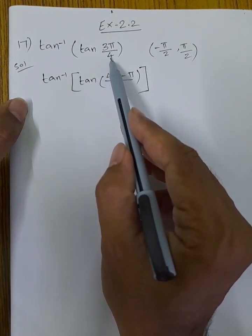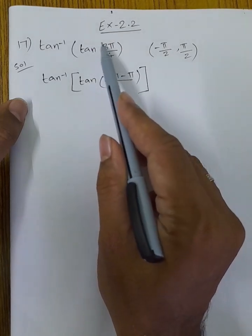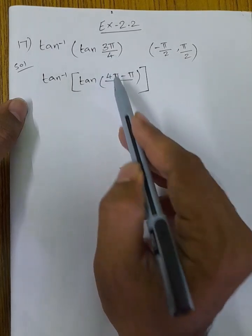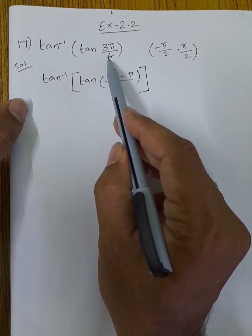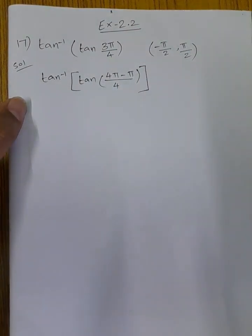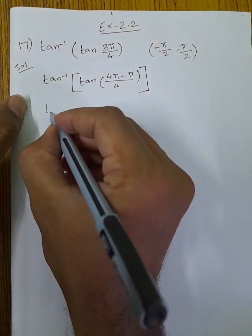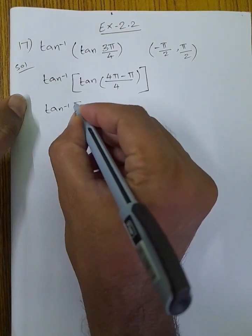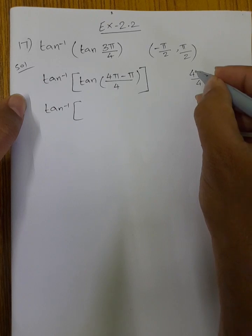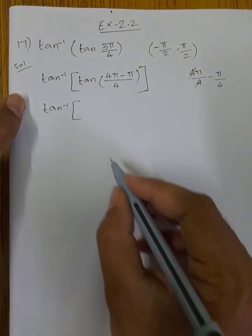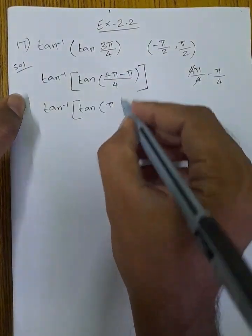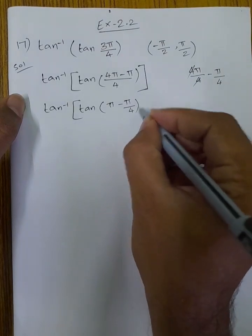The numerator value is here. If you add that value, you can subtract or add. If we add: 4π minus 3π — that means 4π minus π/4. So tan inverse of tan(4π minus π/4). Under split: 4π/4 minus π/4.